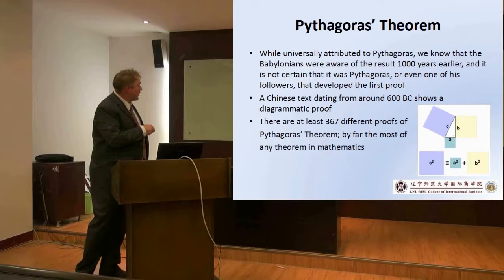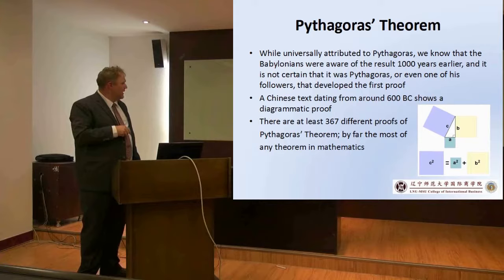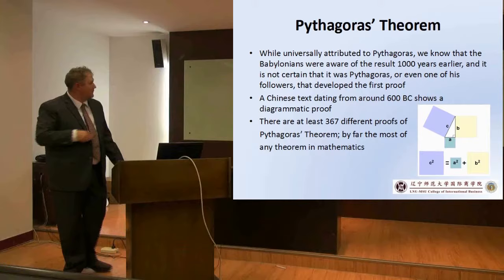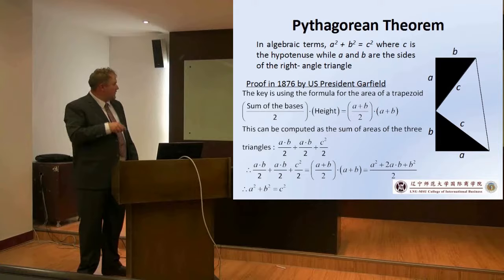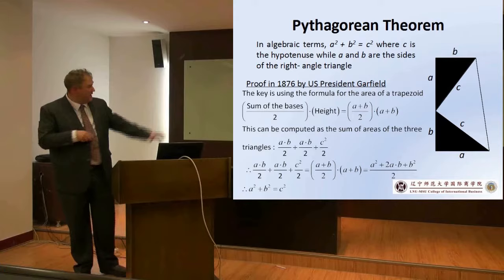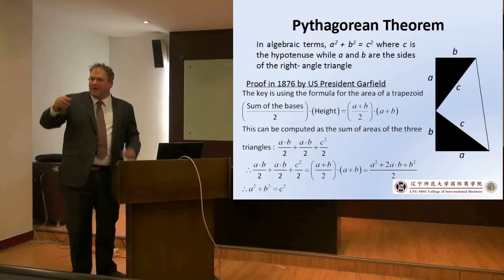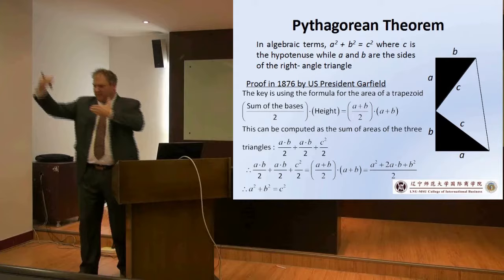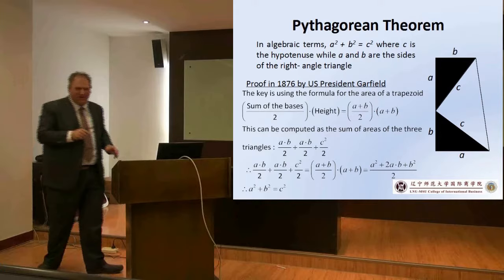The Chinese had a diagrammatic proof of the Pythagorean theorem around 600 BC. There are about 367 different proofs — including one by US President Garfield, who used the area of a trapezoid. He noted that the middle triangle is half a square because one angle is 90 degrees, and when you work it out, you solve A squared plus B squared equals C squared. So you're changing length A, B, and C and saying it's area — when you see something squared, it's a length times a length, which is an area. Now you take that area and translate it to length.